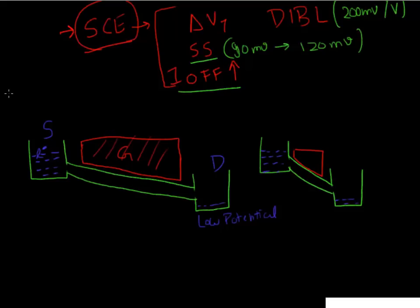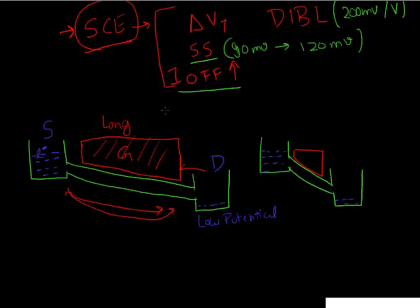This gate electrode is very effective in controlling this flow if you have a long channel device. But if you bring these two beakers close to each other, you have this short channel device where your source and drain beakers are very close to each other. And this one single nozzle is not sufficient to control the flow of electrons — there'll be leakage of electrons from the source to drain.